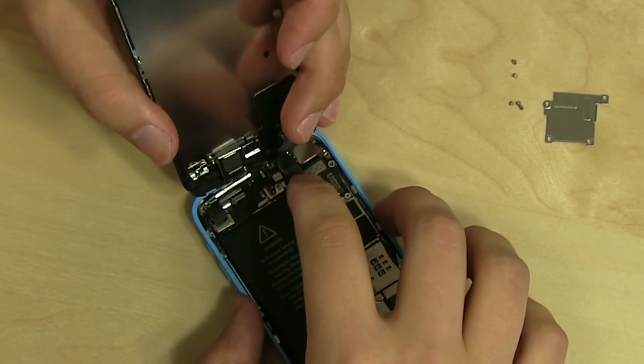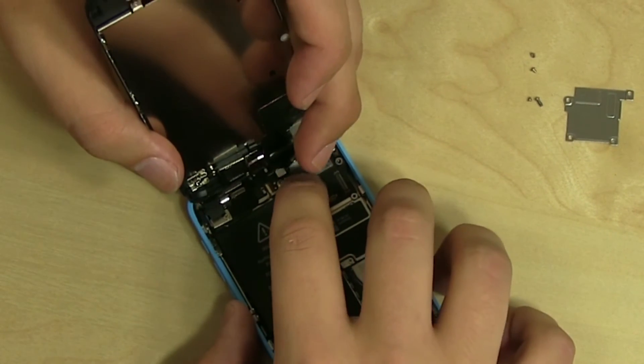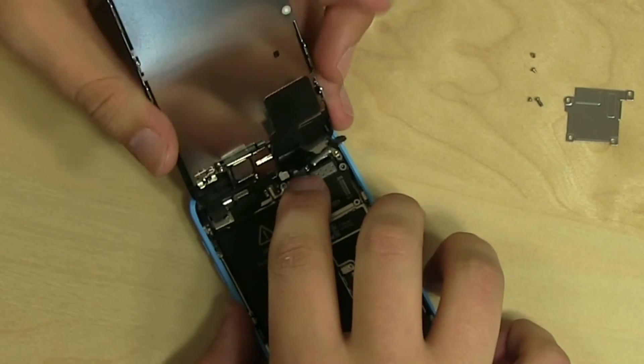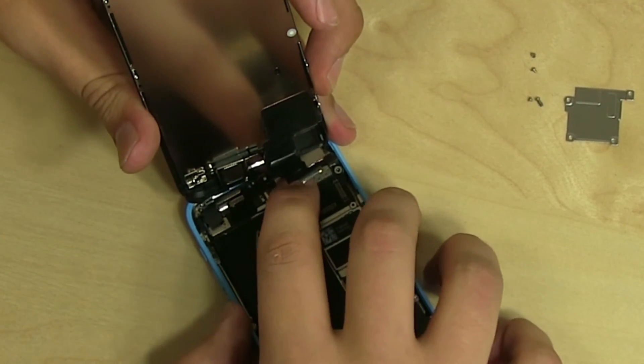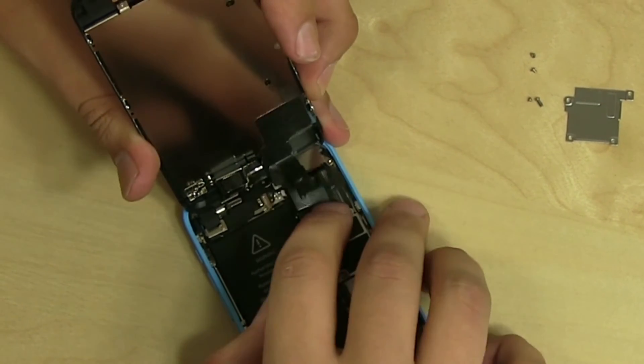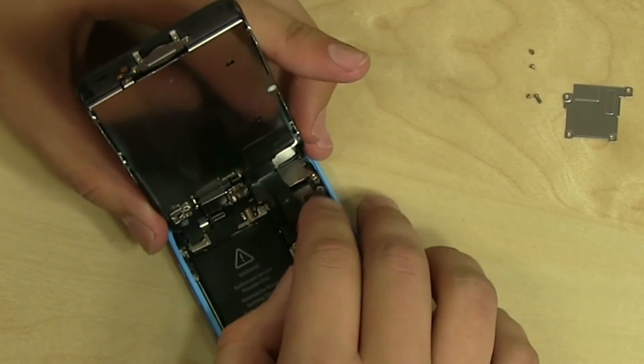Position the display assembly at the right angle to the body and align at the top edge. Gently snap in three small connectors to the logic board. They will make a distinct click when aligned and plugged in properly.